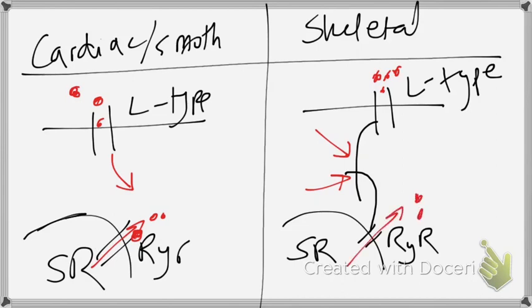So as you can see, the calcium did not really go and touch the RYR at all. It stayed in its place, but because of this mechanical joint, this calcium was released.